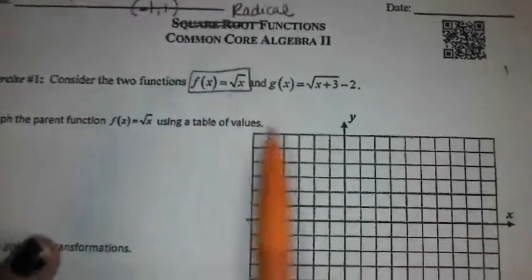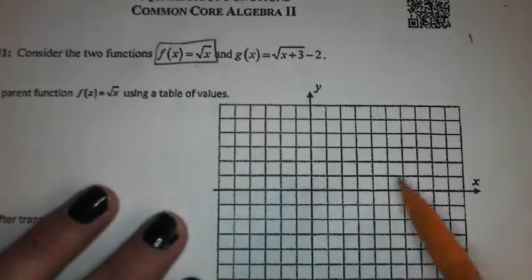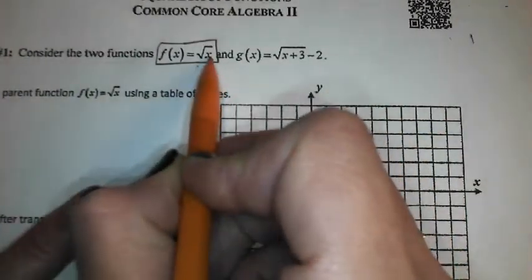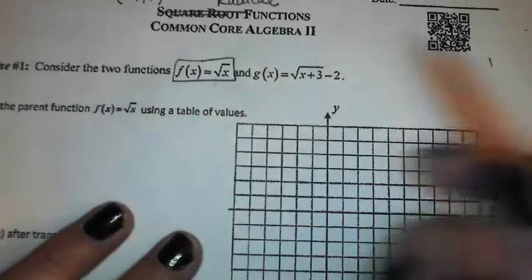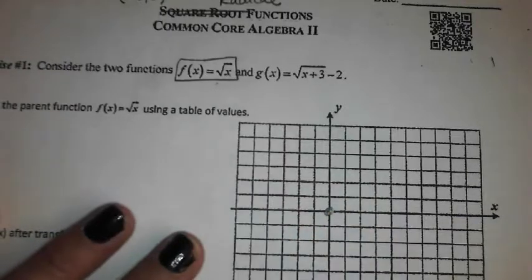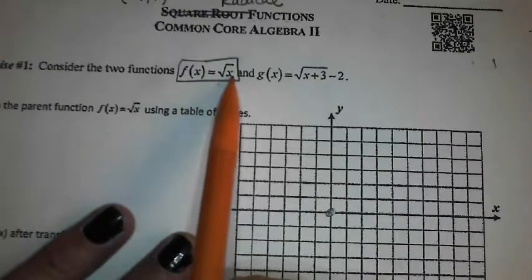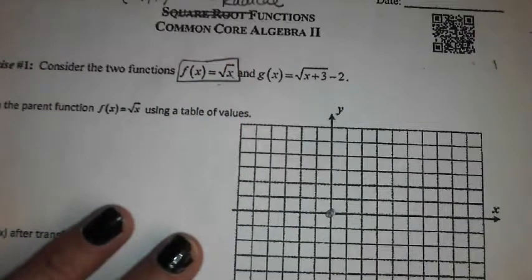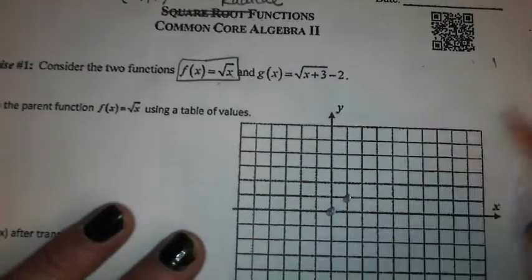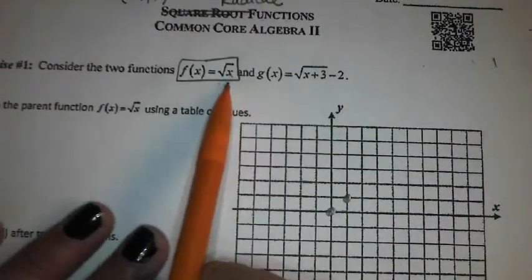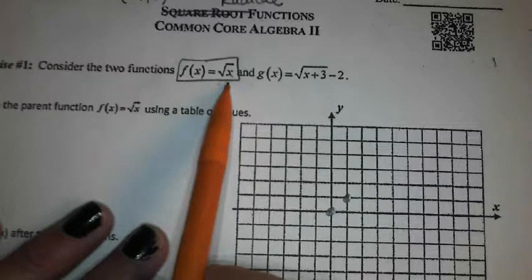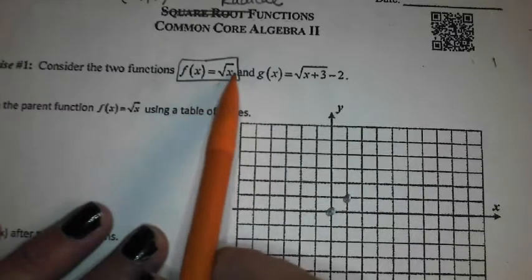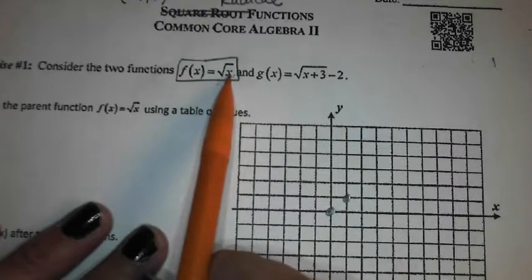On a radical graph, your key points are: 0 — what? If I plug in 0, what's the square root of 0? Zero. So 0,0. Then 1 — if I plug in 1, what's the square root of 1? One. So 1,1. If you plug in 2, are you going to know what the square root of 2 is? How about the square root of 3? But the square root of 4 we do, right? If I plug in a 4, what's my appropriate y-coordinate? 2.